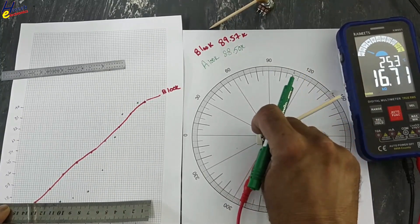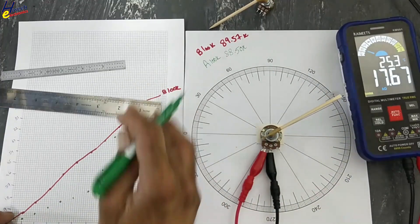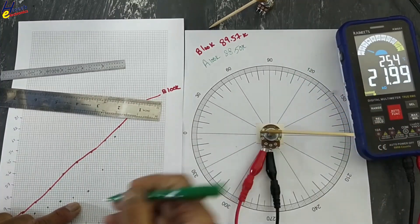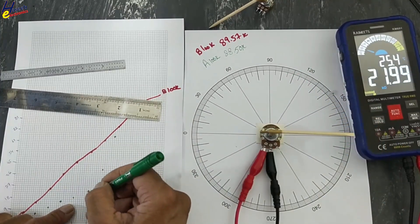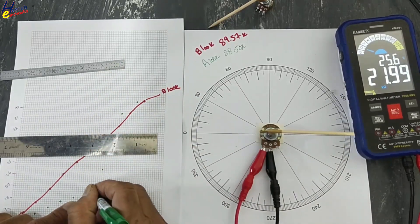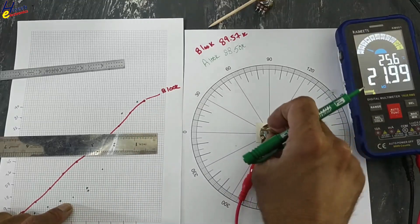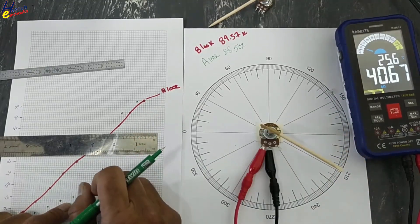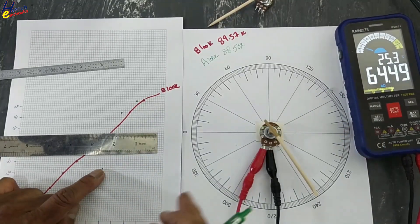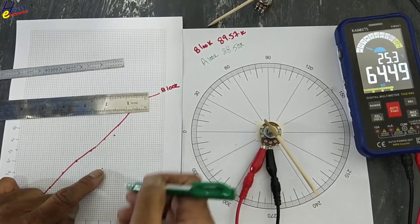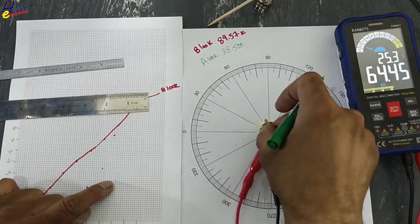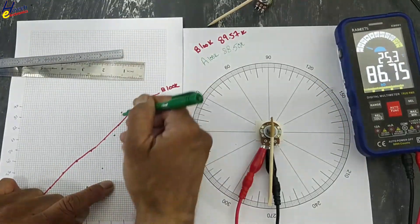Rechecking A 100K readings: at 180 degrees approximately 18K to 20K, at 210 degrees 40K, at 240 degrees 64K, and at 270 degrees 86K. These confirm the logarithmic curve shape.